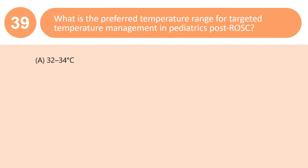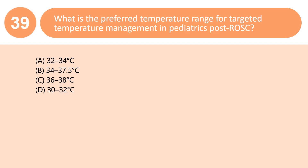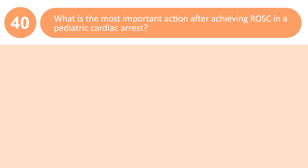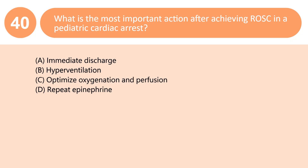What is the preferred temperature range for targeted temperature management in pediatrics post-ROSC? A. 32–34°C. B. 34–37.5°C. C. 36–38°C. D. 30–32°C. Answer: B. Maintain normothermia at 34–37.5°C to prevent secondary injury after ROSC in children.